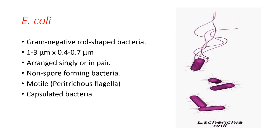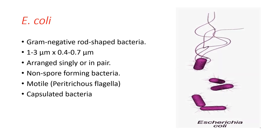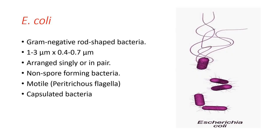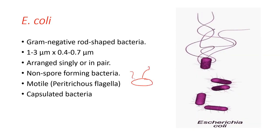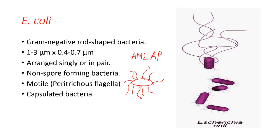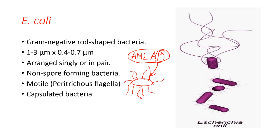Regarding motility, bacteria which have flagella are motile. E. coli has peritrichous flagella. Peritrichous flagella means the flagella are distributed all over the surface of the bacteria. I have also made a separate video about the different types of flagella. The 'P' in the mnemonic stands for peritrichous, meaning flagella distributed all over the surface of the bacteria.